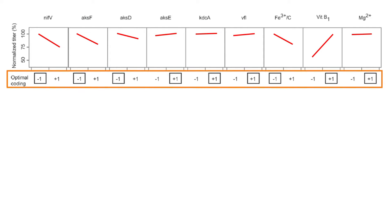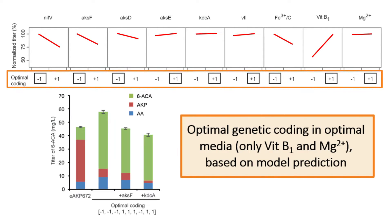When the associated genetic construct is built and evaluated in media composition that only contains vitamin B1 and magnesium ion, the strain yielded a 5-fold higher titer than the base level.